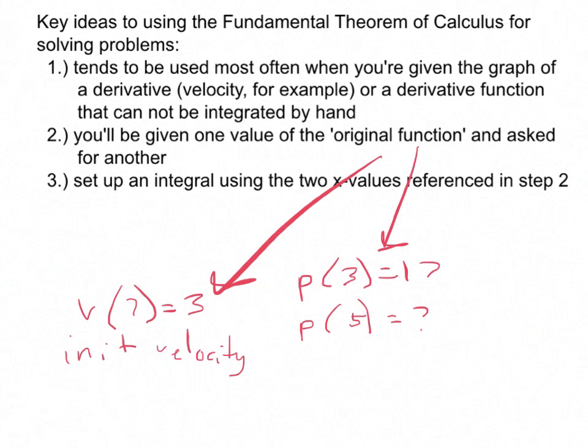And the idea is that when you're in step 3, when you set up an integral, you're going to set it up using the two x values referenced in the previous step. So you're going to use 3 and 5 on your integral. On this one, you're going to use 7 and 0 on your integral. Some of you may be looking at this one weird, going like, wait a minute, shouldn't those be reversed? Not really. I'll get into that in the example problem.